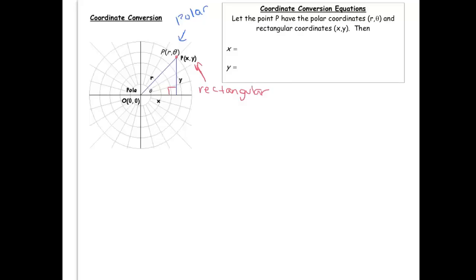And so, if you look at the diagram here, you'll notice that the cosine of theta is equal to x over r, and multiplying through by r tells me that x is equal to r cosine theta.